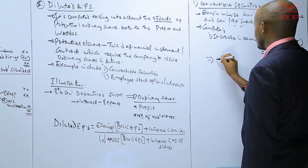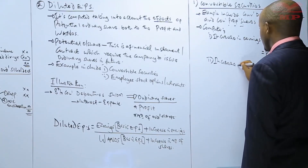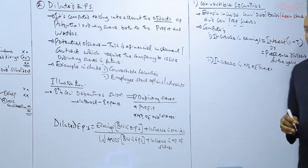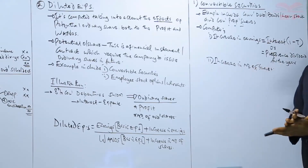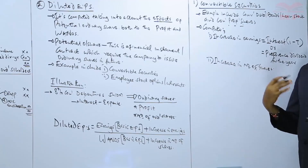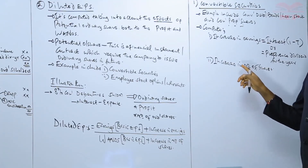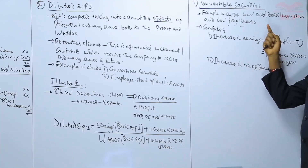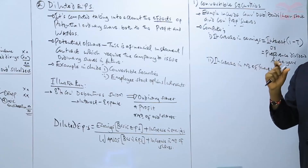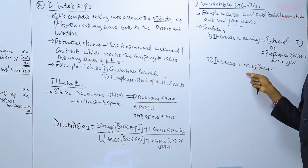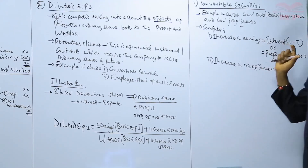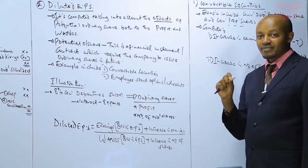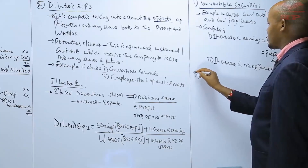Second, we compute the increase in number of shares. This is the number of ordinary shares which would have been issued if those convertible securities were converted into shares in the course of the year. We compute this using the conversion ratio provided — for example, convertible debentures or bonds having a certain value are convertible into a certain number of ordinary shares. Having computed both values, we apply the formula to compute the diluted earnings per share.